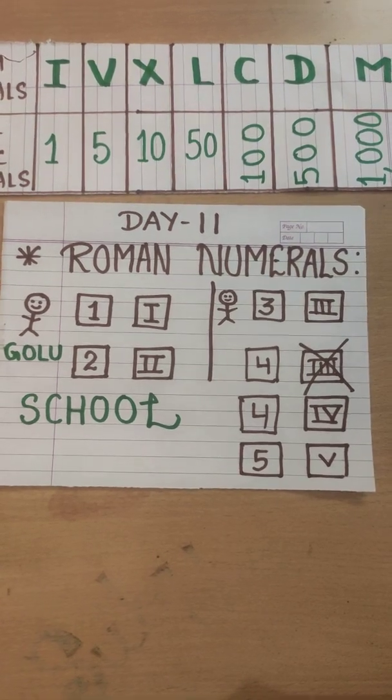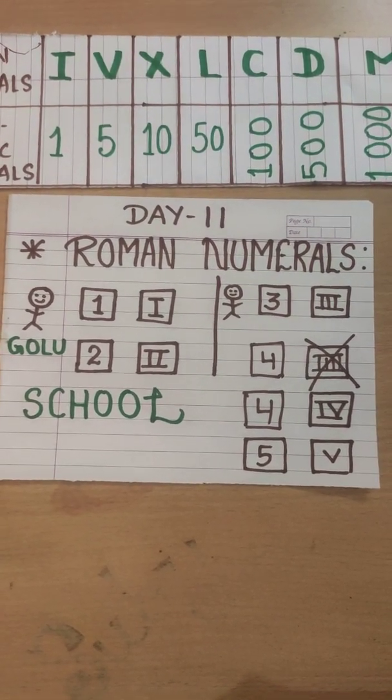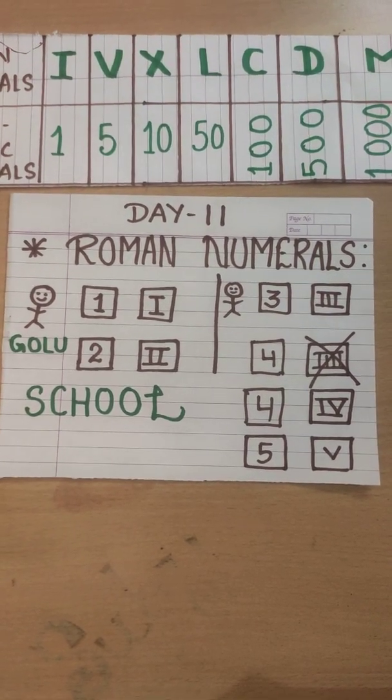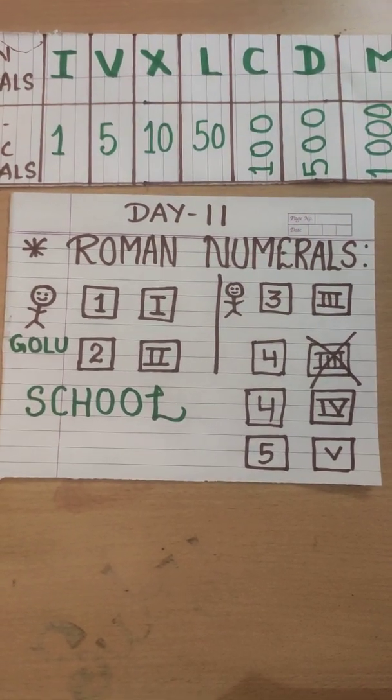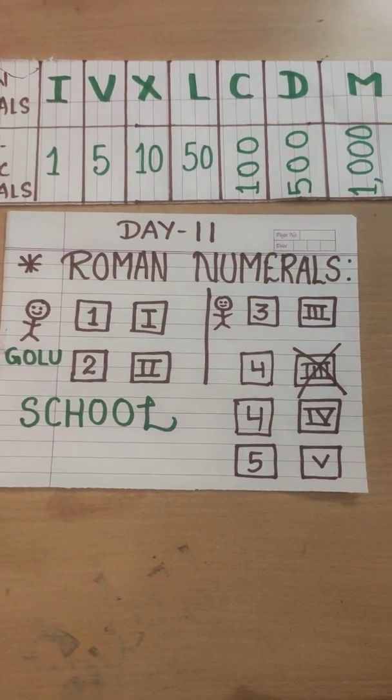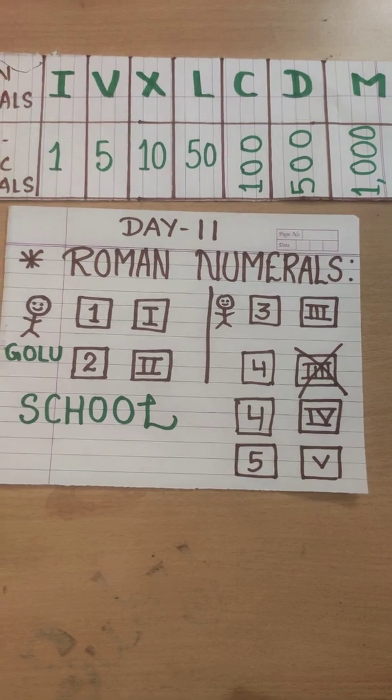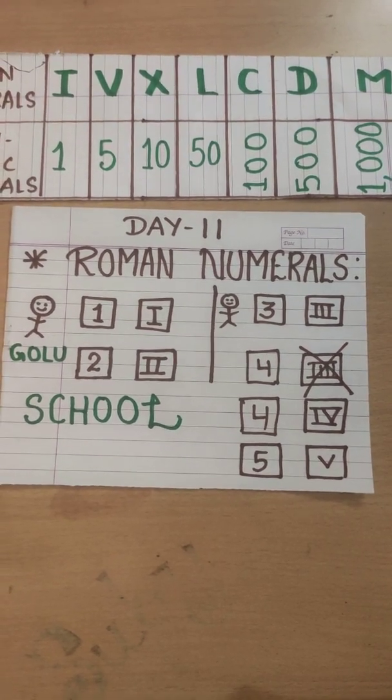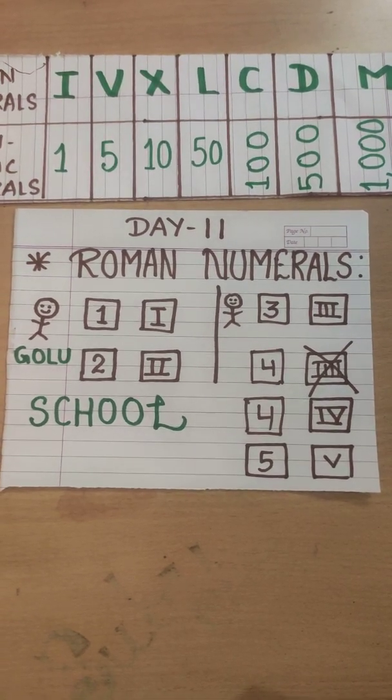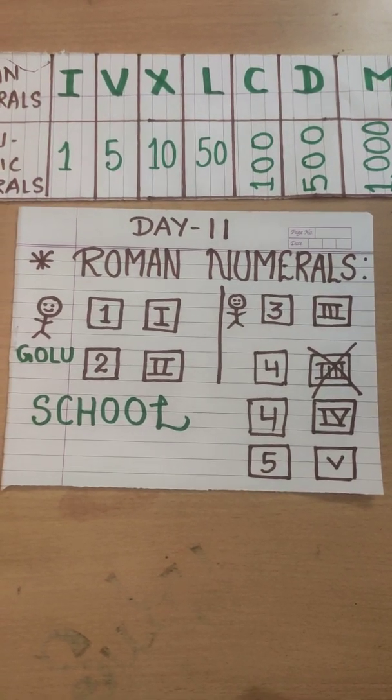5 are known as Hindu Arabic numerals. And the numbers which are written with the help of alphabets I, V, X, L, C, D, M are known as Roman numerals. These are the way through which we can write our Hindu Arabic numerals. Here we should first understand about its table.